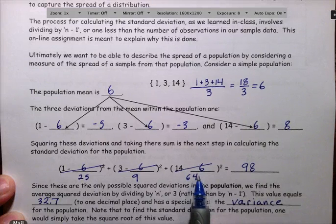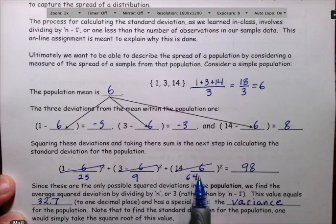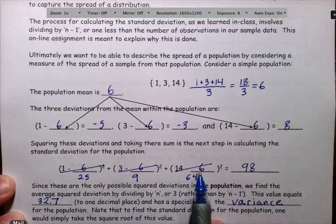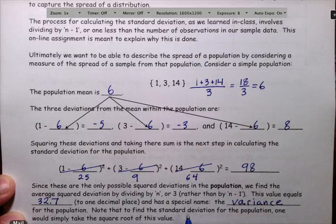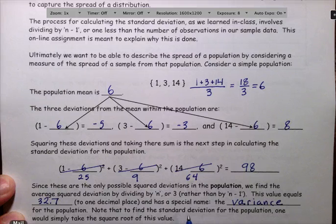So for the population, dividing appropriately means dividing by the actual number of deviations. That's 3. In a sample, dividing appropriately would mean dividing by 1 less than the number of deviations, and that's what we need to try to explain.